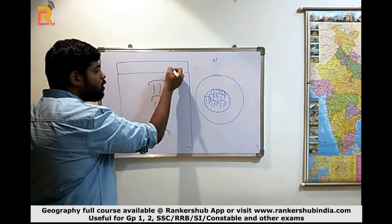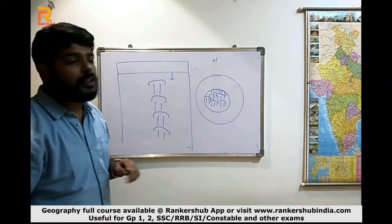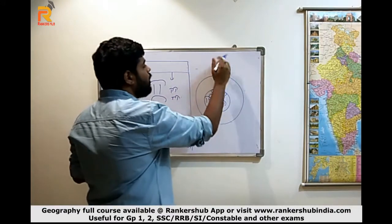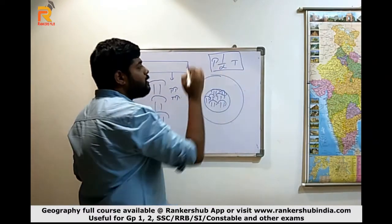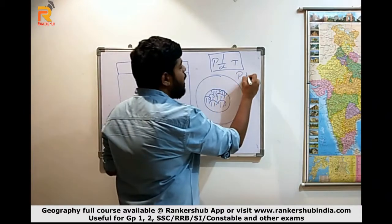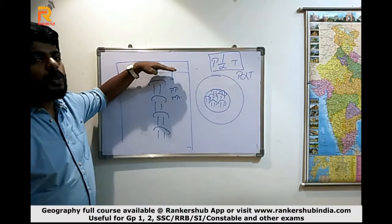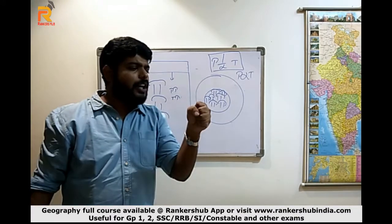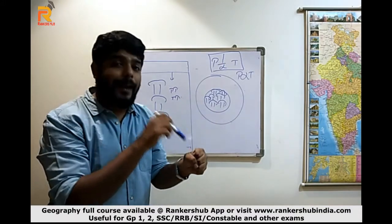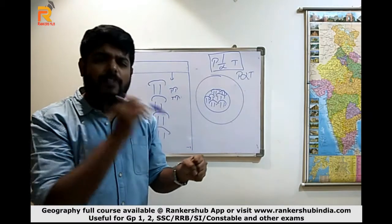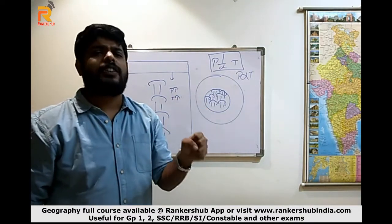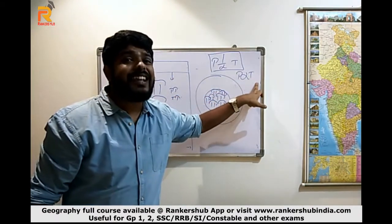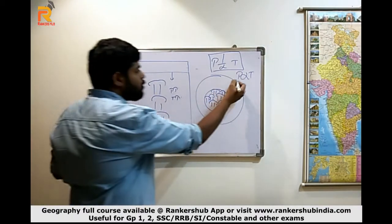When new stone started forming above the trees, the weight of the stone caused pressure to increase on the lower layer. When pressure increases under abnormal conditions, temperature also increases. In geography, always remember: the normal condition is that pressure is inversely proportional to temperature, but the abnormal condition is that pressure is directly proportional to temperature. So when the rock started forming above this layer, there was high pressure, and when there was high pressure, temperature also increased.